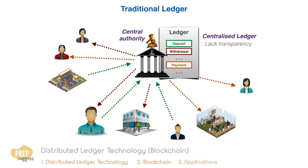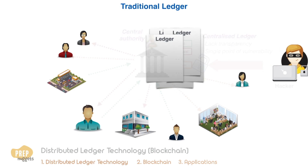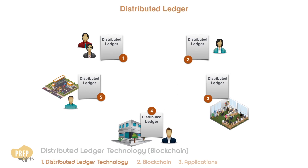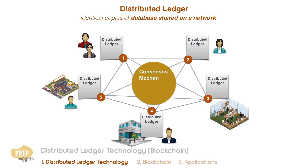This is a centralized ledger in which the bank is the central authority. Such a system can lack transparency and is one single point of vulnerability where hackers can attack. In contrast, a distributed ledger is a database that is shared on a network so that each participant has an identical copy.